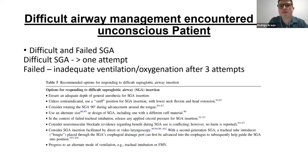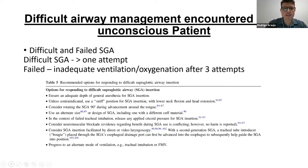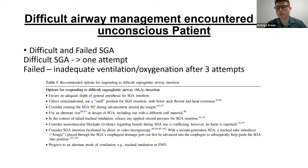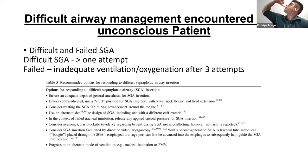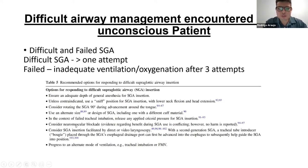A difficult supraglottic airway is more than one attempt. A failed supraglottic airway is inadequate ventilation and oxygenation after three attempts. What should we do? Ensure depth of anesthesia, exaggerate the sniffing position, and consider rotating the supraglottic airway 90 degrees during insertion — rotating when you reach the tongue and then advancing. Consider neuromuscular blockade if not yet given. If you fail to progress, change your mode of ventilation — fall back to face mask ventilation or advance to tracheal intubation.